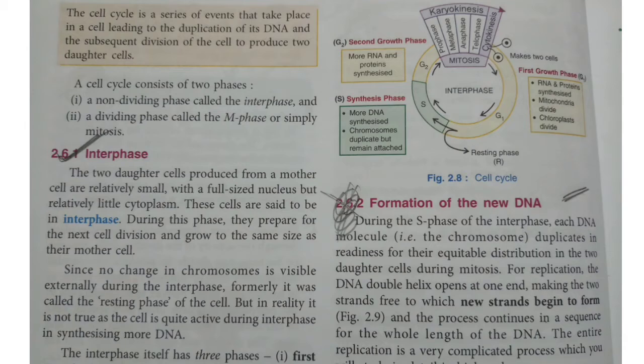What do you mean by interphase? The two daughter cells produced from a mother cell are relatively small, with a full-sized nucleus but relatively little cytoplasm. These cells are said to be in interphase. During this phase, they prepare for the next cell division and grow to the same size as their mother cell. Since no change in chromosomes is visible externally during interphase, formerly it was called the resting phase of the cell.